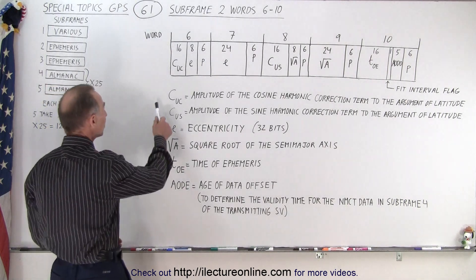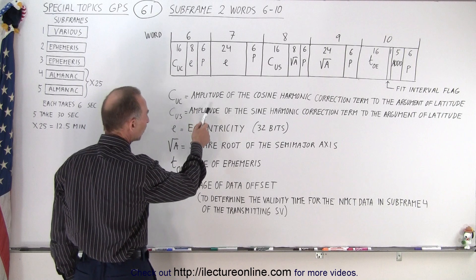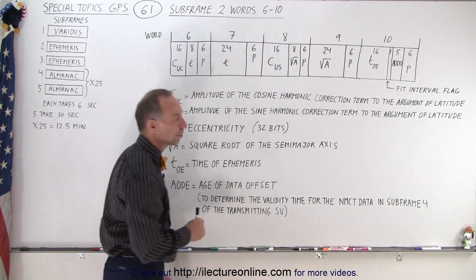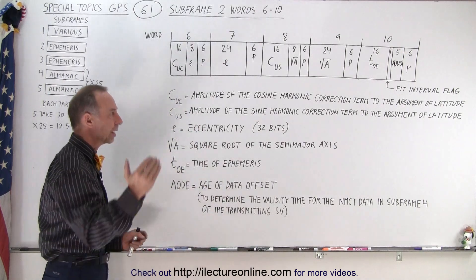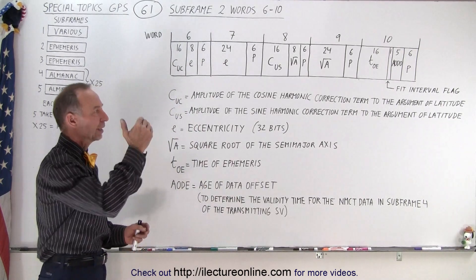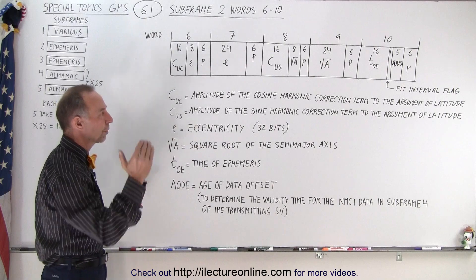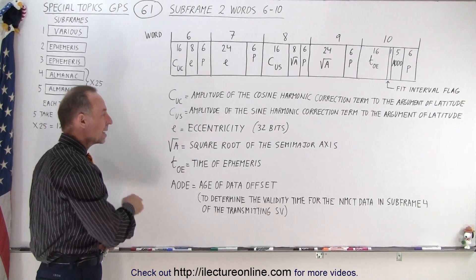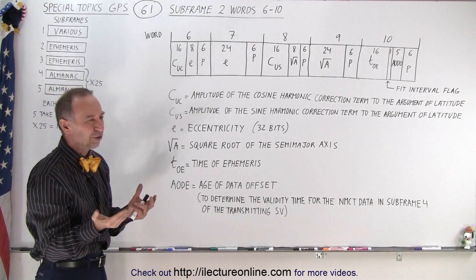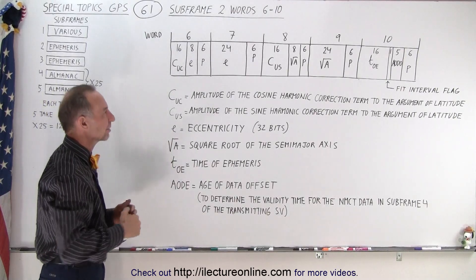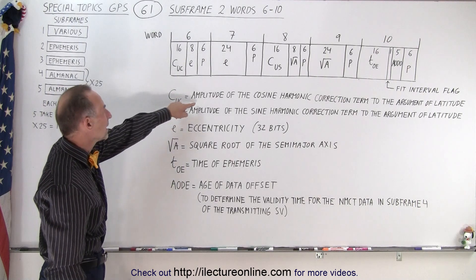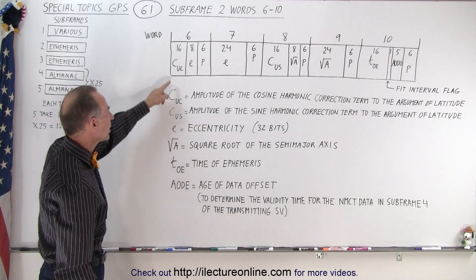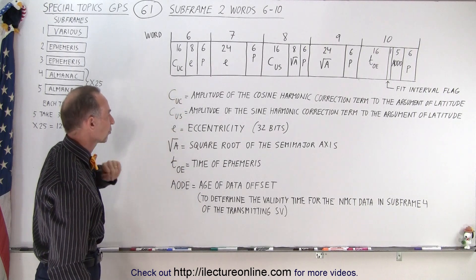First, the CUC is the amplitude of the cosine harmonic correction term to the argument of latitude. Because we don't have a perfectly circular orbit, we have an orbit with some eccentricity. There's going to be a sine or cosine function correction factor that we need, and we need the amplitude of that cosine harmonic correction term. CUC gives you that amplitude of that correction term.